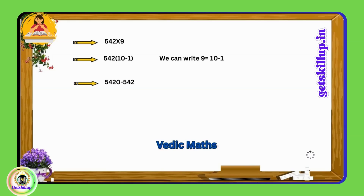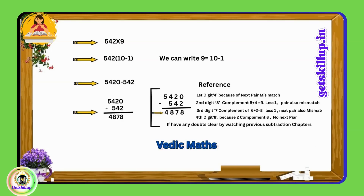Now, we need to subtract the original number 542 from the result 5,420. Subtraction is relatively straightforward, especially since we've already learned the left-to-right subtraction technique in previous videos explaining the concepts of Vedic math. Therefore, to find the result of multiplying 542 by 9, we simply subtract 542 from 5,420, resulting in 4,878.